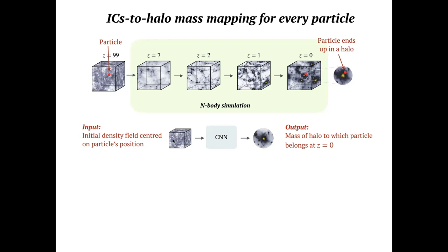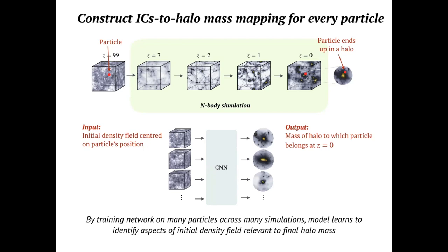The input is essentially a sub-box of 15 megaparsecs per h in length centered on each particle's initial position, and the label is the mass of the halo where that particle ends up at redshift zero. You can create this mapping for many different particles across many different simulations — different realizations of the initial conditions density field — and train the neural network on these different examples so that the model learns which aspects of the initial density field are relevant to predict the final halo masses.